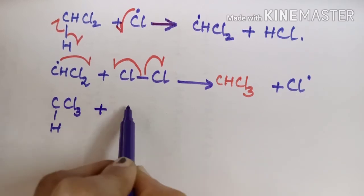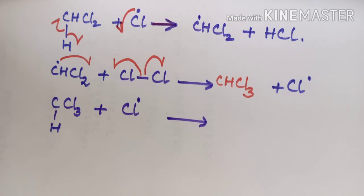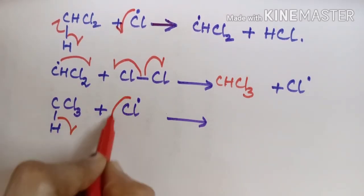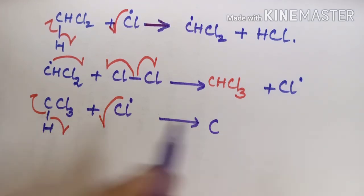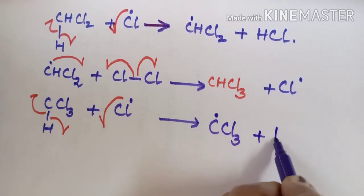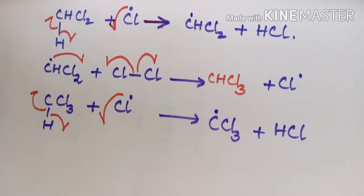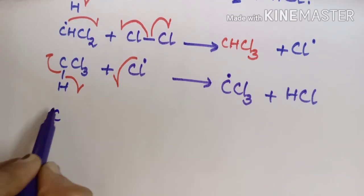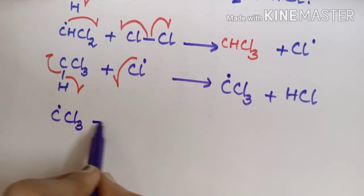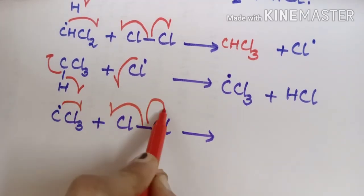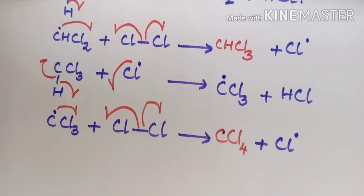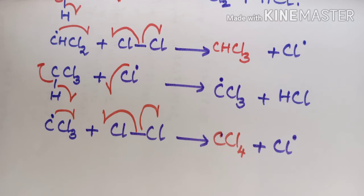CHCl3 is again attacked by the Cl radical, resulting stepwise in HCl and the carbon free radical CCl3. This CCl3 radical attacks a new molecule of chlorine, resulting in the formation of the final product CCl4 and releasing a Cl radical. These are the different steps involved in the propagation reaction.